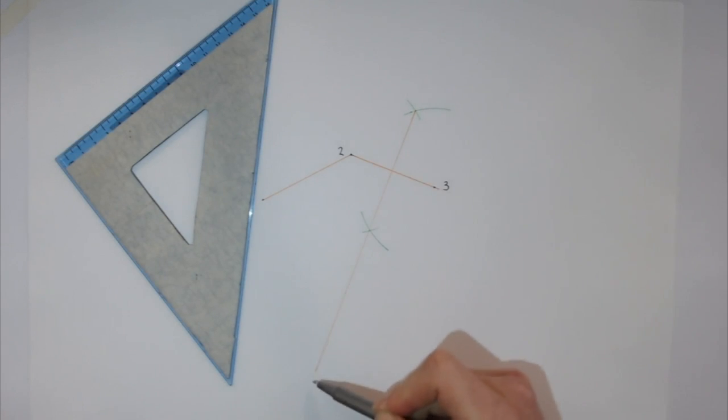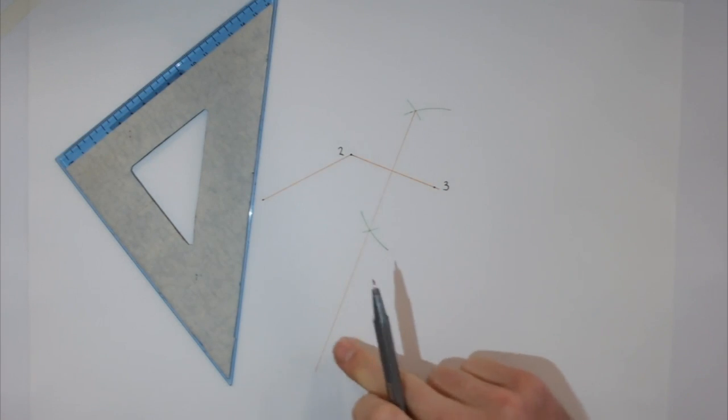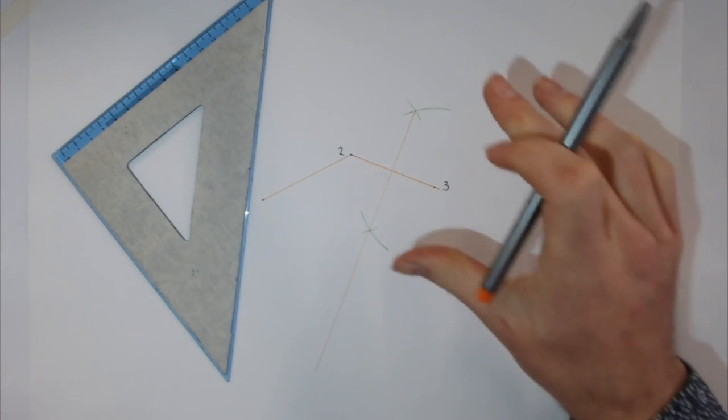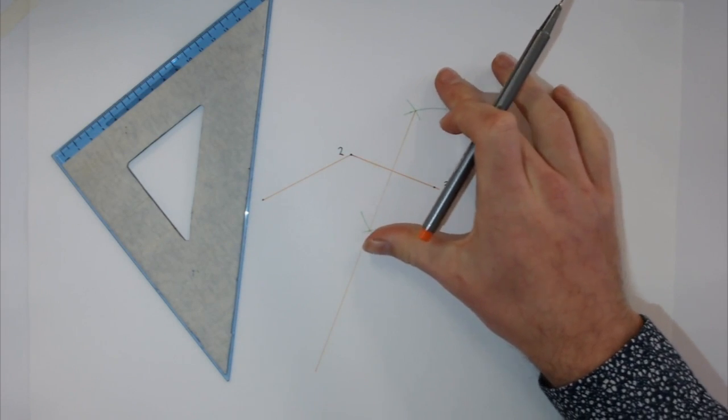I've brought the line through here because somewhere down here will be the center point for the circle. Now we repeat the exact same process.